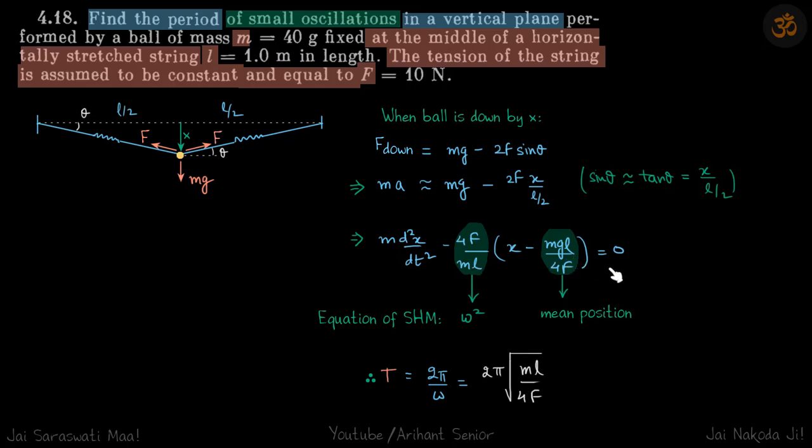This is a standard equation of SHM where this represents ω², and mgl/4F represents the mean position. So if this is ω², the time period is 2π/ω, which is our answer.